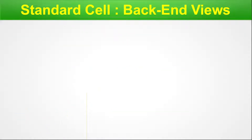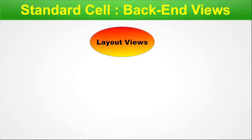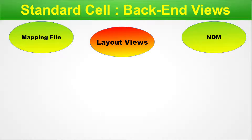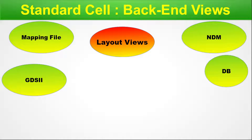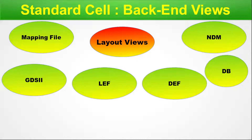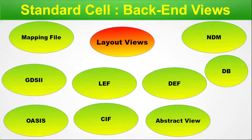For the standard cell backend views, the tools pick up layout-related files from the library. These include mapping files, NDM files (Synopsys tools), GDS2 files, DB, LEF and DEF (Cadence tools), Oasis files, CIF files, and abstract views. Each of these view types warrants its own episode — if you need details on any specific view, mention it in the comments.